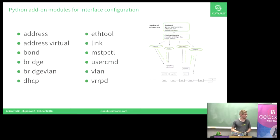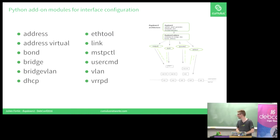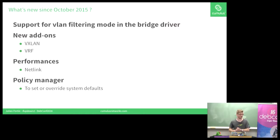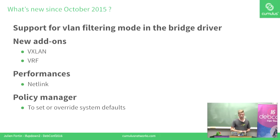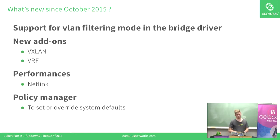Here is the list of the various add-ons currently available within the IfUpDown2 package. What's new since October 2015? We've added support for VLAN filtering in IfUpDown2, two new add-ons — VXLAN and VRF — we increased performance with Netlink, and we introduced a policy manager.